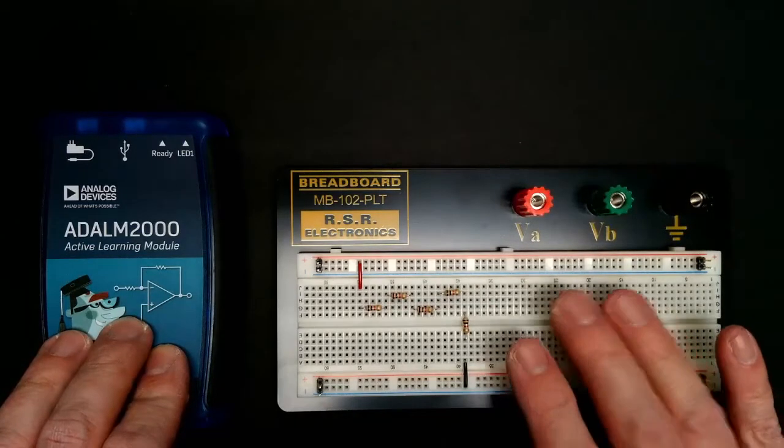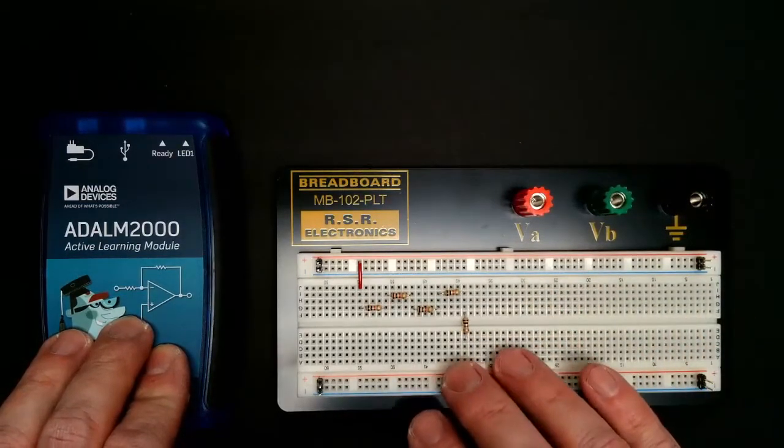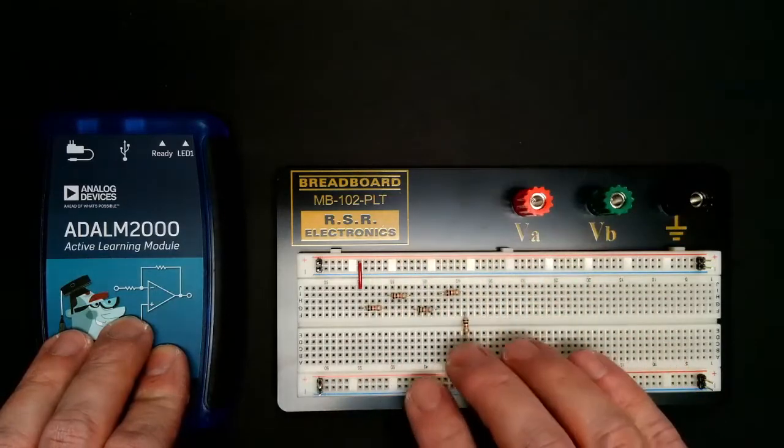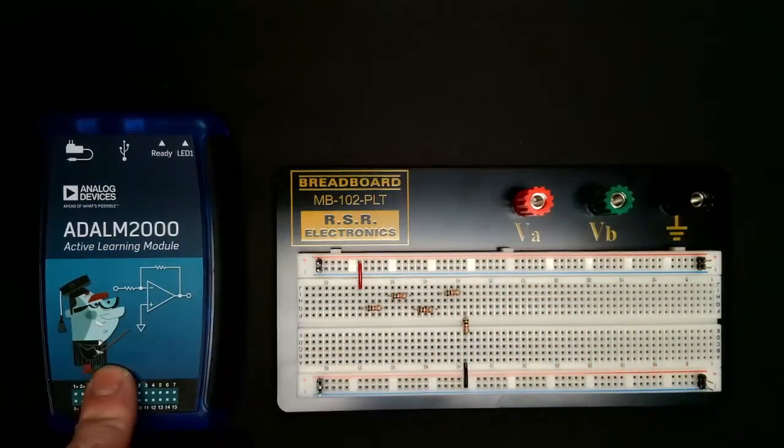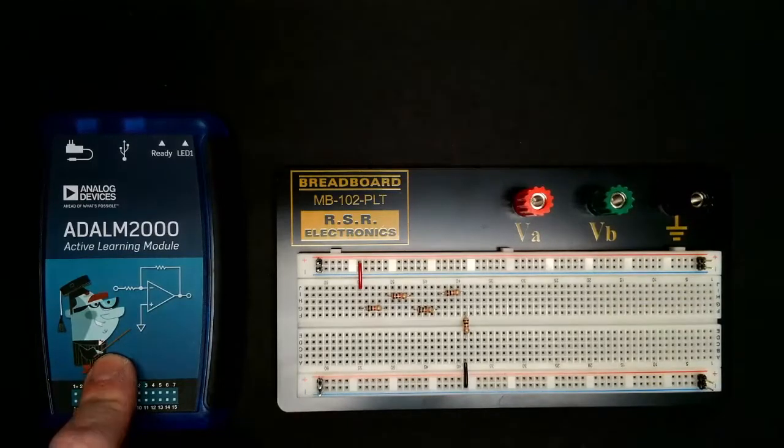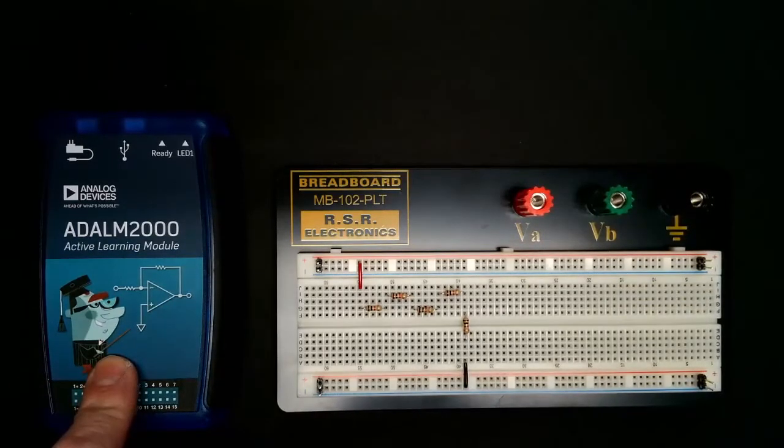I'm not going to go into how the circuit works and how current flows, it's mainly to look at the power supply and the voltmeter functionality of the M2K.